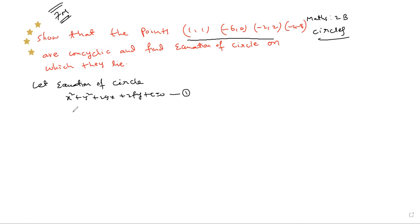Now equation 1 passes through (1,1). Substituting: 1 + 1 + 2g + 2f + c = 0, which gives 2g + 2f + c = -2, equation number 2.